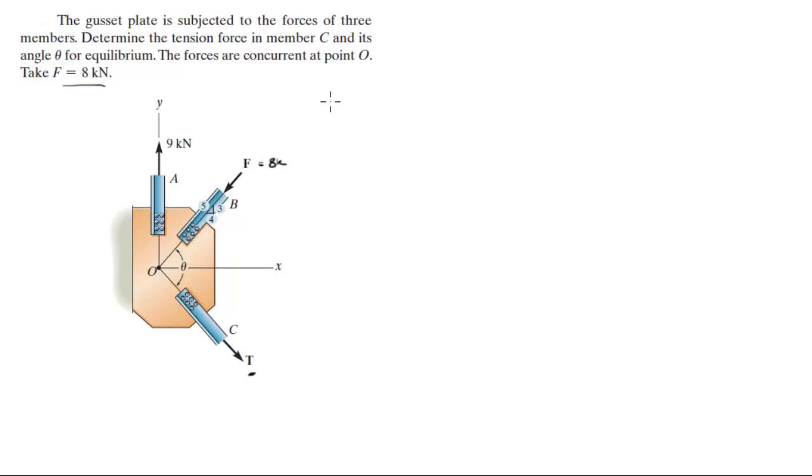Alright, so first you know that the sum of the forces in the X is equal to 0. You know this has no X component. The 8 kN F has 8 kN times 4 over 5 in negative because it's going towards the left. And the tension is going towards the right, so it's plus T cosine of—I'm going to call this angle phi—is equal to 6.0.